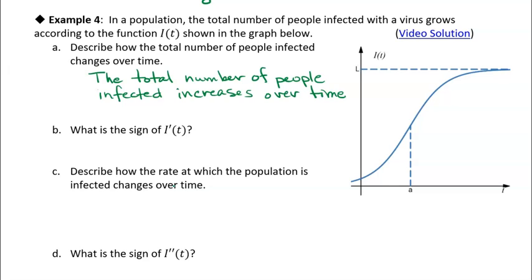It's always increasing, but not at a steady rate. Here it's increasing fairly slowly, but then it increases a lot faster, and then it slows down. The sign of the derivative of I of T is positive — we can tell based on the tangent lines, because they all have a positive slope.